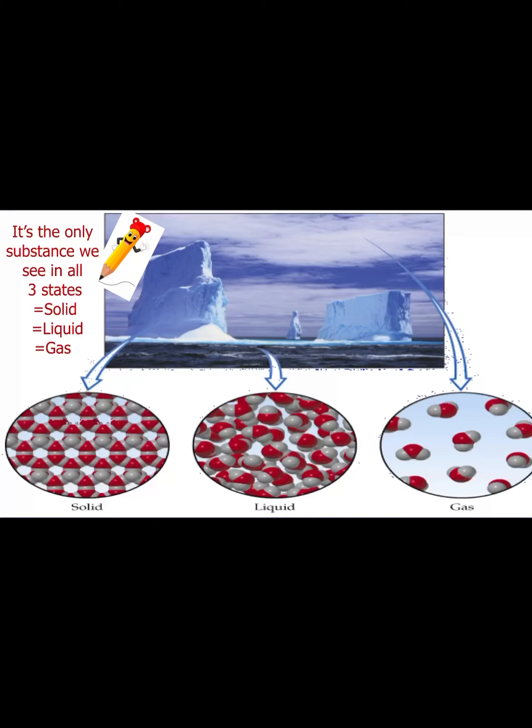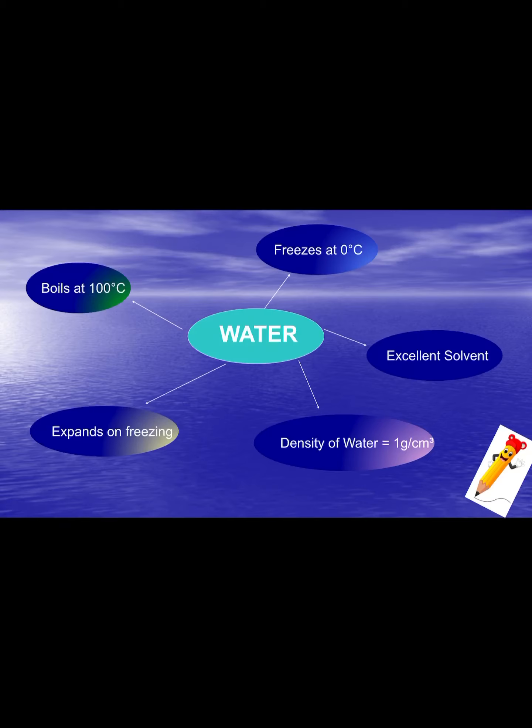I'm just going to run through the PowerPoint here on water and the water cycle. You can see water in three states: solid, liquid, and gas. The particles of a solid are close together with very little movement, whereas in a liquid they're a little bit spread out, and in a gas the molecules are much further apart and able to move around freely with greater speed.